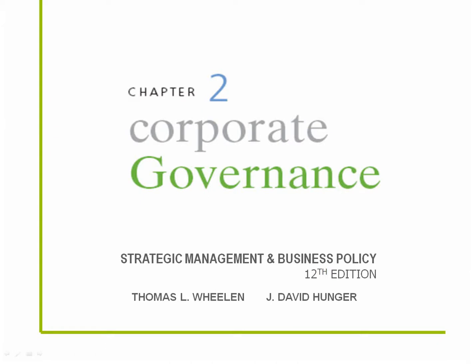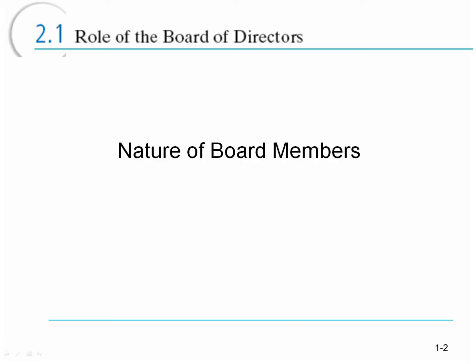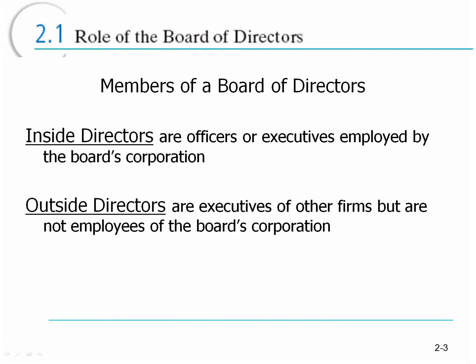Hello class and welcome to chapter 2. In this lecture we're going to talk about corporate governance and the nature of board members. As we talked about in other lectures here for chapter 2, the board of directors is a group of individuals who's responsible for overseeing top management, making sure that top management is doing what's in the best interest of the shareholders. In this lecture we're going to talk about the composition of the board member team.